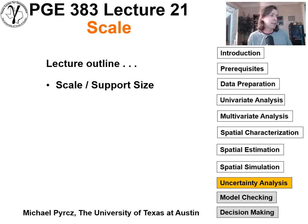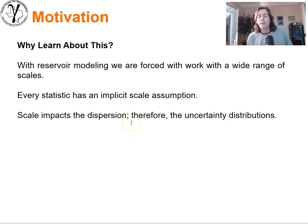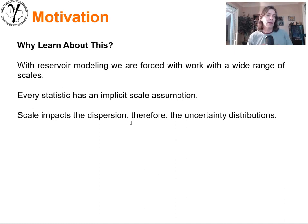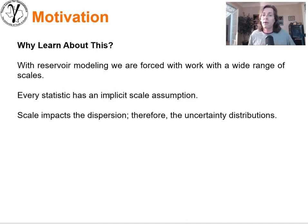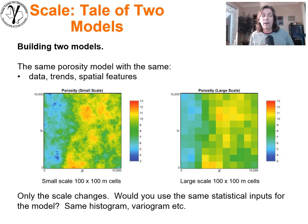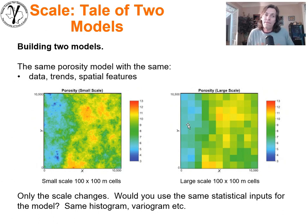To start off, we'll talk about scale and support size. The motivation for this lecture is that with reservoir modeling, we are compelled to work with data and models, cells and so forth, all at a wide range of different scales. Every statistic we calculate — and we do use statistics for prediction — has an implicit scale attached to it, so we need to be cognizant of that. Scale impacts the dispersion, the spread of the distribution, and therefore directly impacts the uncertainty model. So let's tell a tale of two different models. If we were building two different models, one looks like this, the other one looks like this.